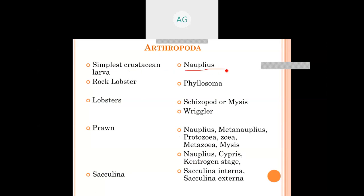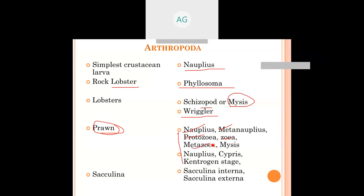In Crustacea specifically: in simple crustaceans there is the Nauplius larva; in rock lobster there is the Phyllosoma larva; in lobsters there is the Mysis larva. For prawn, which is a better example of Crustacea, the larval sequence is: Nauplius, Metanauplius, Protozoea, Zoea, Metazoea, and Mysis. These are also part of your practical classes, so you can observe them on microscope slides.